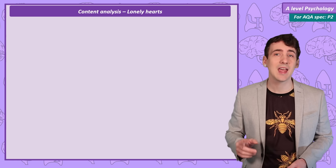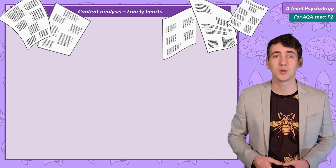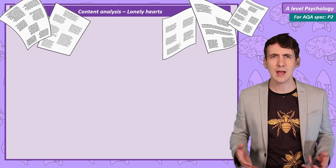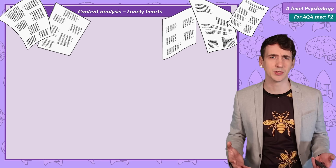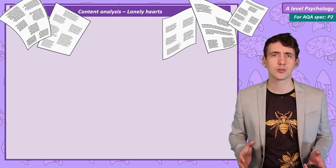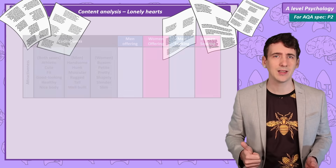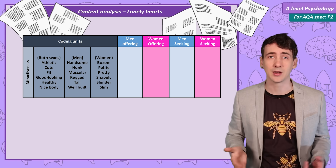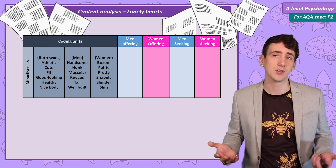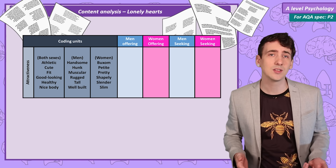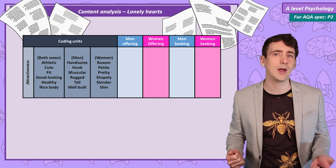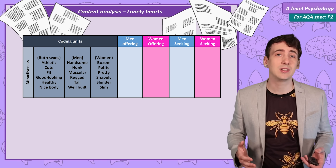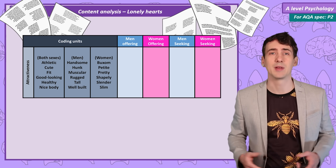To test these ideas, 881 lonely hearts adverts were taken from four newspapers in America. The ages were recorded, and coding frames for physical attractiveness included terms like athletic, attractive, cute, fit, good looking, healthy, and nice body for both sexes; handsome, hunk, muscular, rugged, tall, and well built for males; and buxom, petite, pretty, shapely, slender, and slim for females.